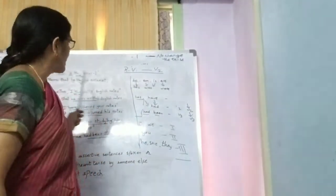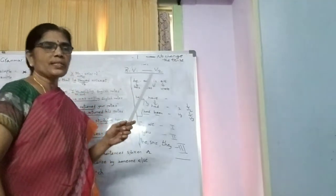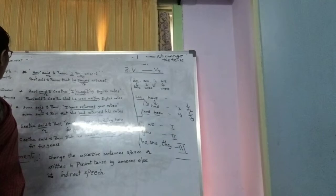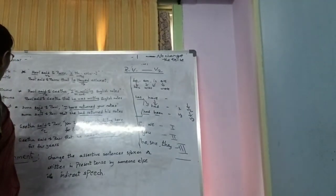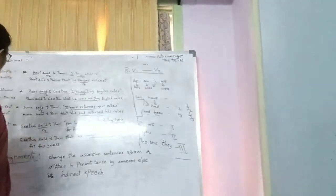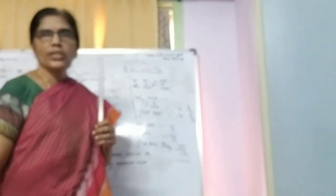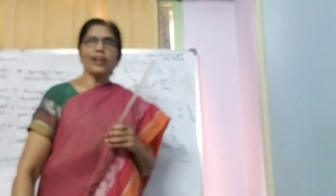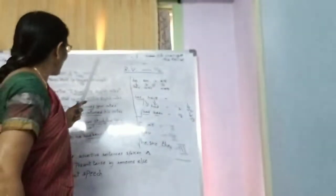What changes take place? Present simple changes into past simple. Present continuous changes into past continuous. Present perfect changes into past perfect. Present perfect continuous changes into past perfect continuous. Let us see these by examples. For convenience, let us take four names: Ravi, Ramu, Gita, Suma.